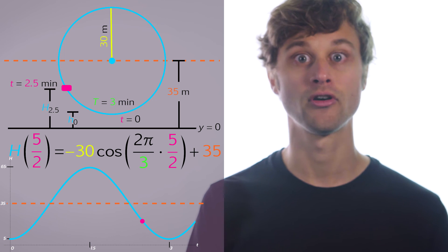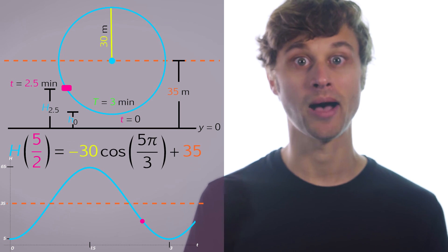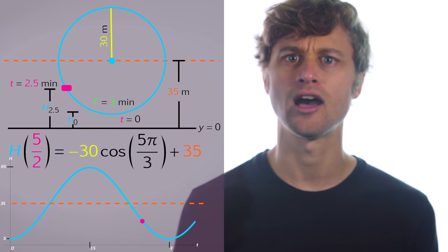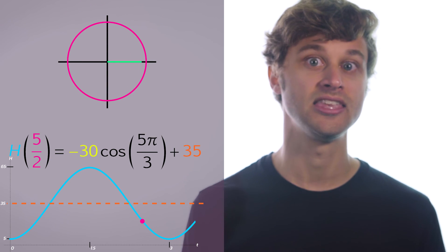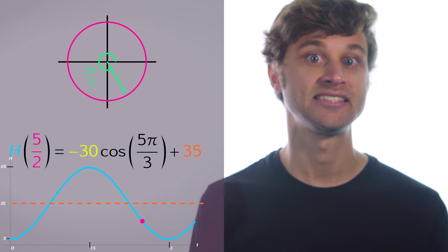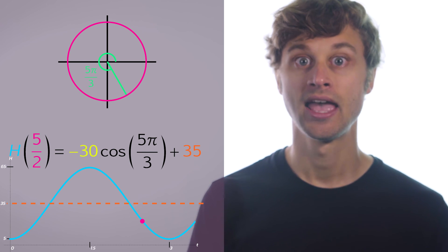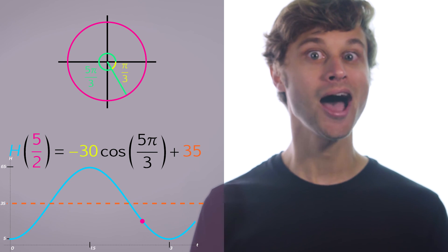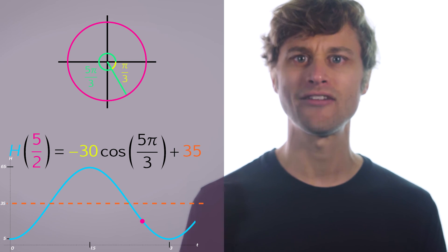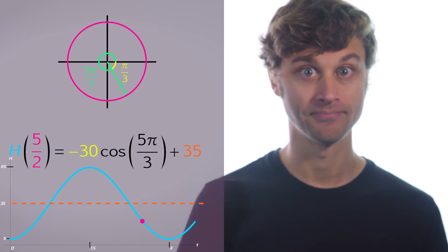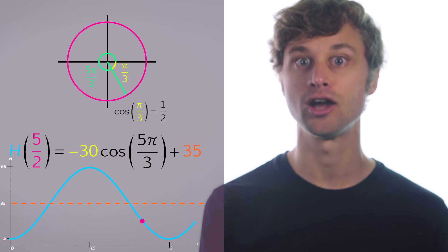So what is the cosine of 5π over 3? Well, if we look at the unit circle here, we can see that the angle 5π over 3 is actually in the fourth quadrant here, and it is an angle π over 3 below the x-axis, so its reference angle is actually π over 3. And we can see that the cosine of π over 3 is equal to 1 half.